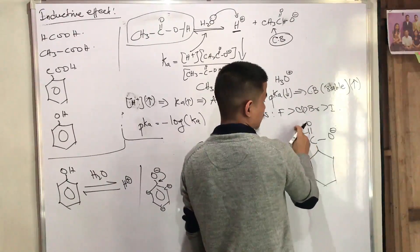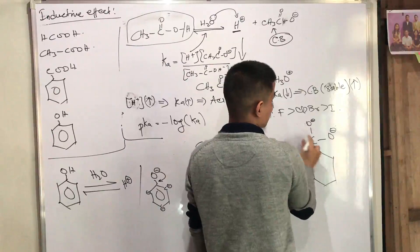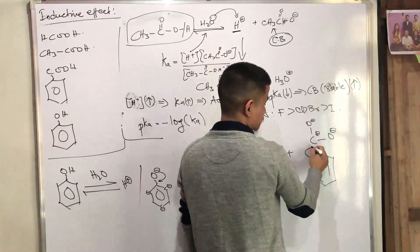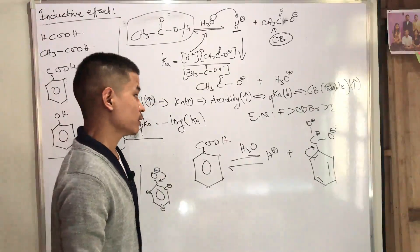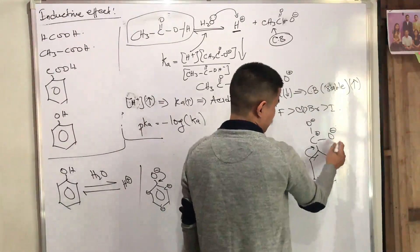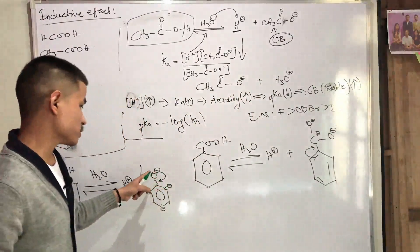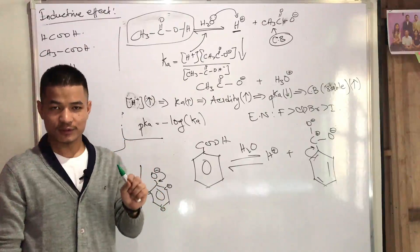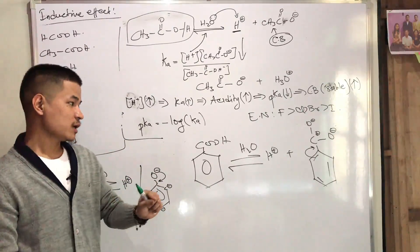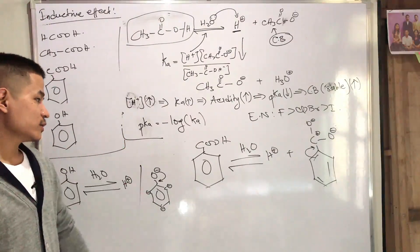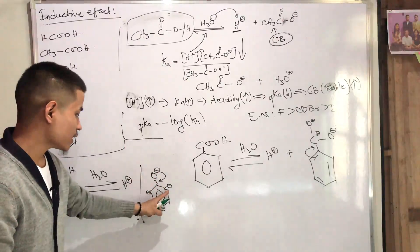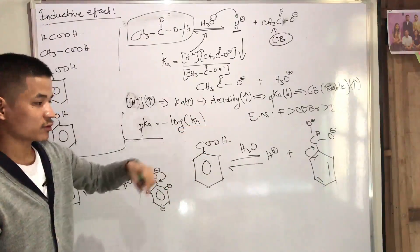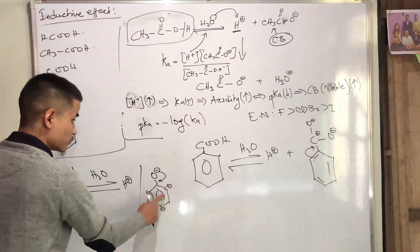The negative lone pair on oxygen creates a double bond — a pi bond — and generates a C plus on carbon, making the oxygen less negative. You can see that the resonance is very important. Oxygen is not always a negative charge; the negative charge is delocalized onto carbon. So the electronegativity places the negative charge on carbon, which is less electronegative and therefore less stable.